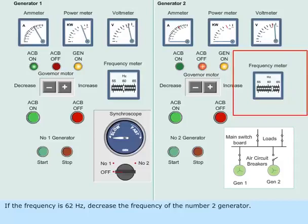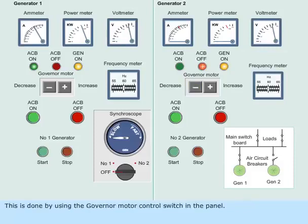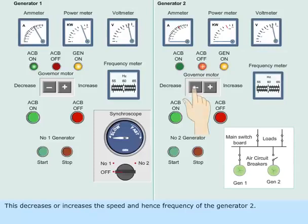If the frequency is 62 Hz, decrease the frequency of the number 2 generator. This is done by using the governor motor control switch in the panel. This decreases or increases the speed and hence the frequency of generator 2.